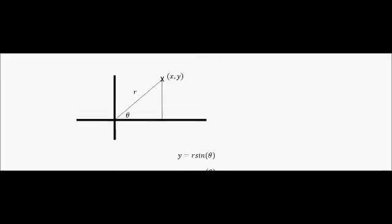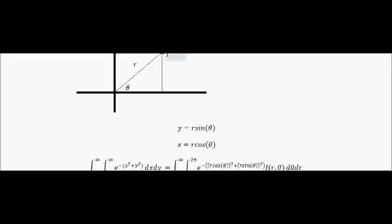I'm going to use polar coordinates. To refresh how polar coordinates work: we have some point xy in the Cartesian coordinate system. If we express it in the polar coordinate system, we express it in terms of the distance from the origin, which is r, and the angle we turn through, theta. From simple trigonometry, y equals r sin theta and x equals r cos theta. That's how you transform from the Cartesian to the polar coordinate system.